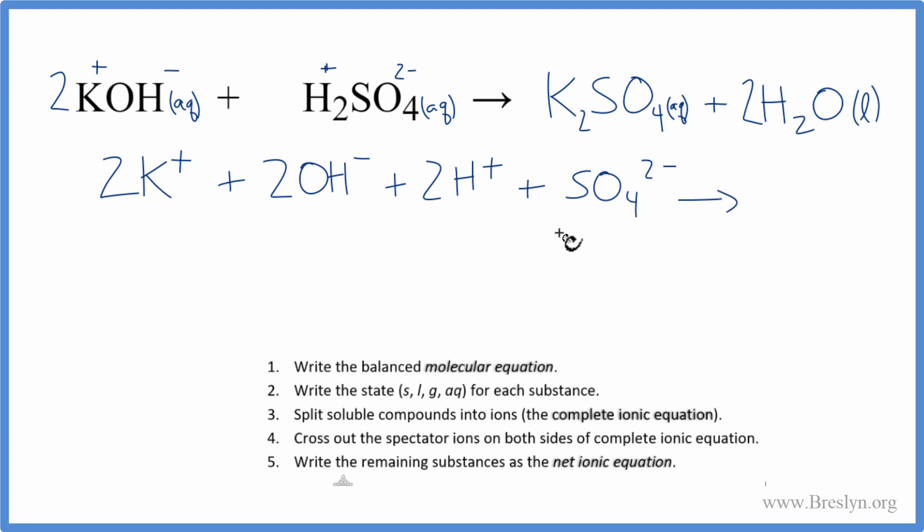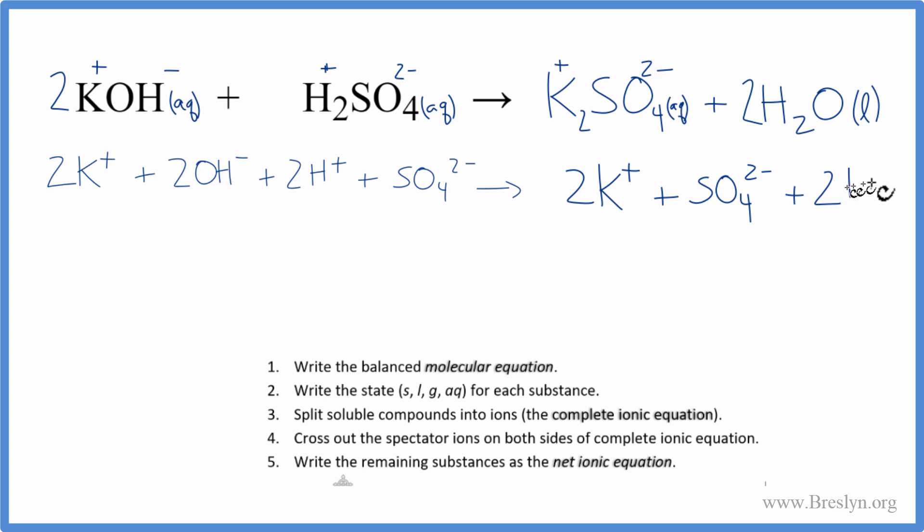Then on this side of the equation, we said this was 1+ and this is 2-, so we have two of these K+, and then we have SO4 2-, one of those. Plus, we don't break the water apart. The water stays together, so we just say 2H2O.